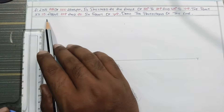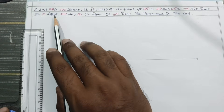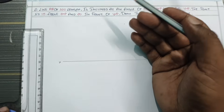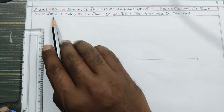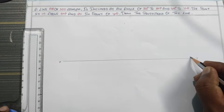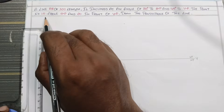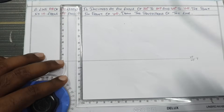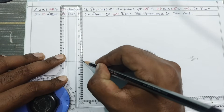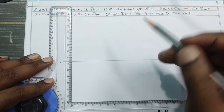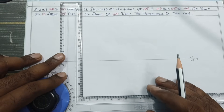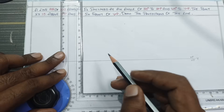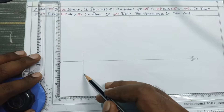First we will draw the points. 50mm above HP — we will draw that. 20mm in front of VP — we will draw that. This gives us 15 above and 20 in front. The height is 15mm and the distance is 20mm. This is 15 and this is 20.